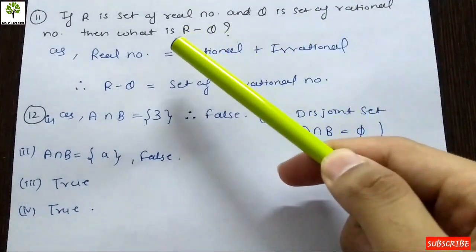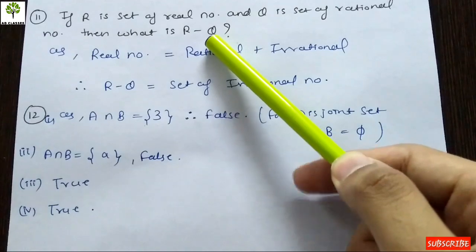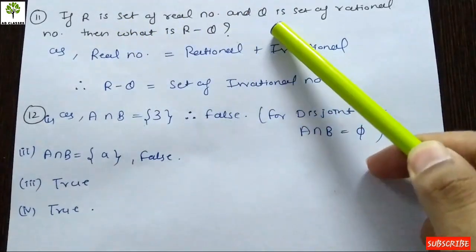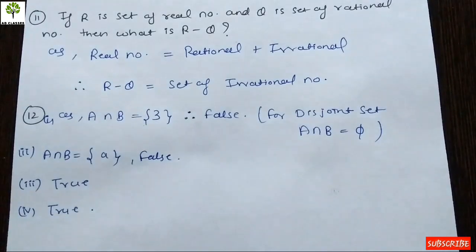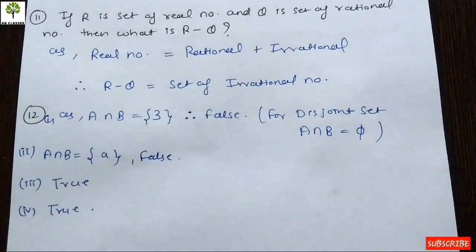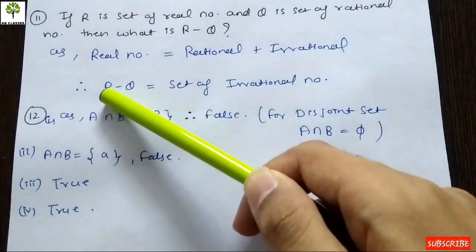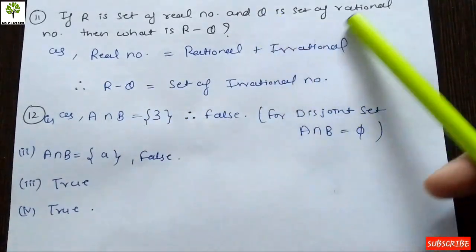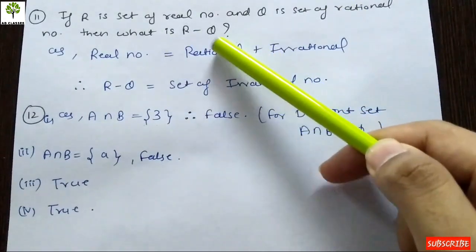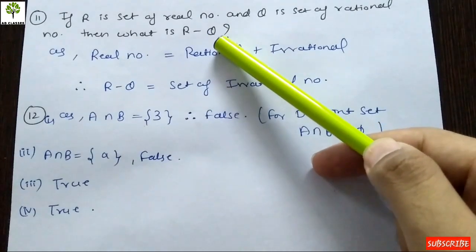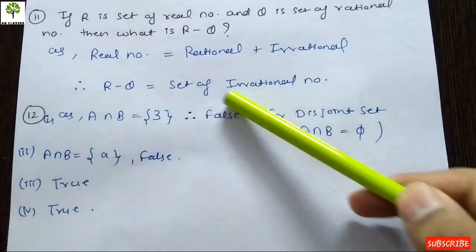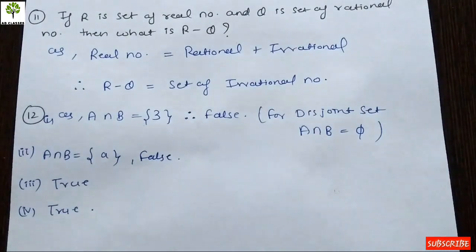If R is the set of real numbers and Q is the set of rational numbers, what is R minus Q? First of all, real numbers are a collection of rational numbers and irrational numbers. So real numbers = rational numbers plus irrational numbers. If we subtract rational numbers from real numbers, the answer is simply the irrational numbers.